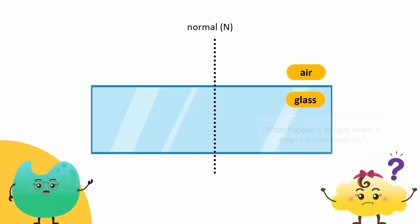This process reverses when light enters from a dense medium like glass to a rare medium like air. The refracted ray moves away from the normal at the point of incidence. So, we get a larger angle of refraction.